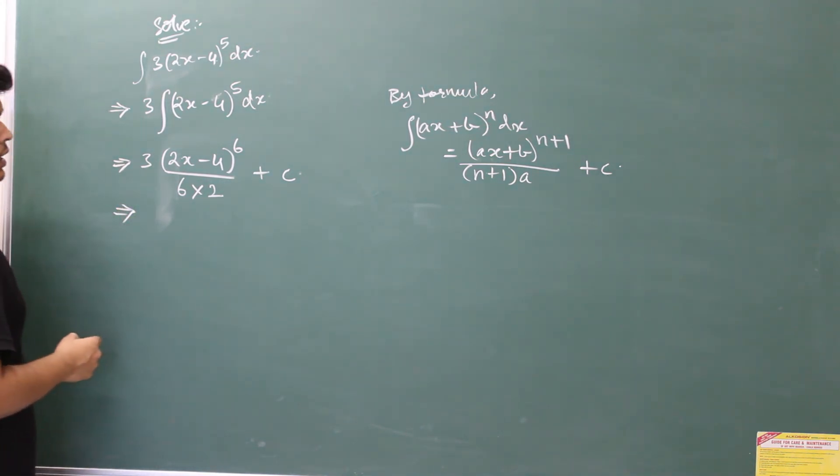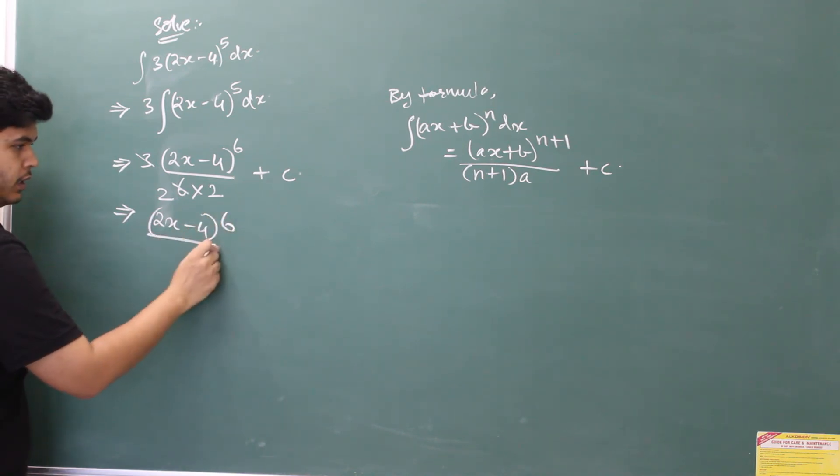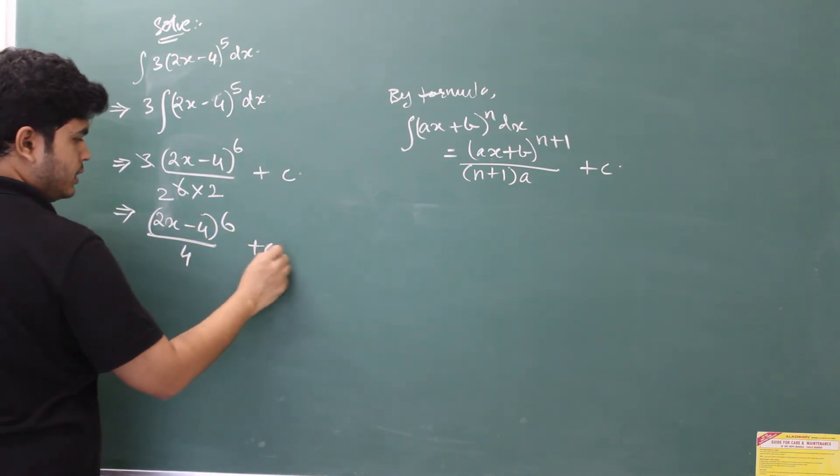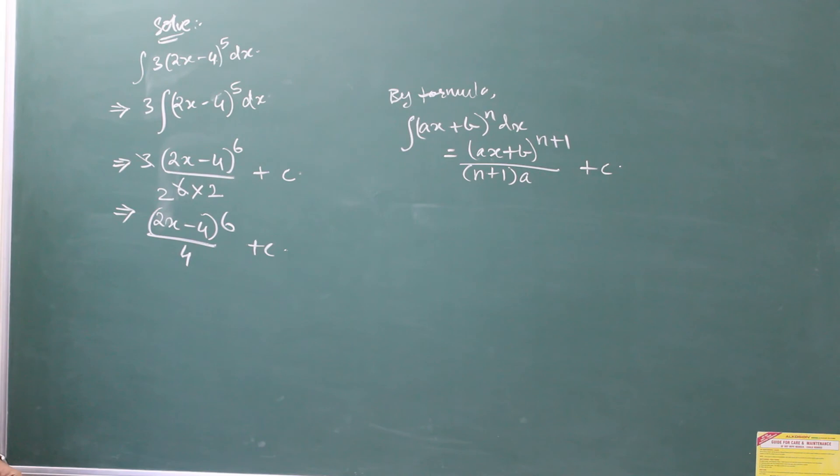Can we simplify this solution further? If we see carefully, we can cancel out 3 and 6. So let's do it. You will have 2 into 2 is 4, so that is 2x minus 4 to the power 6 divided by 4 plus c. This is your solution for the given question. In the next lecture, we will be solving examples like these on indefinite integration.